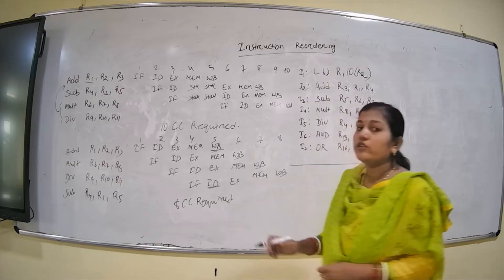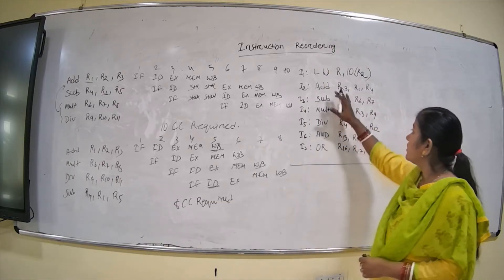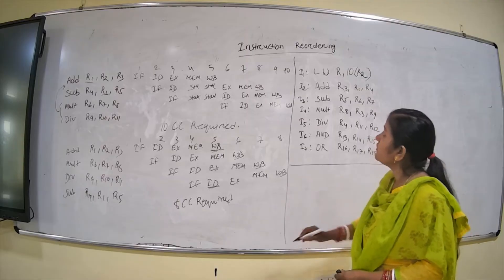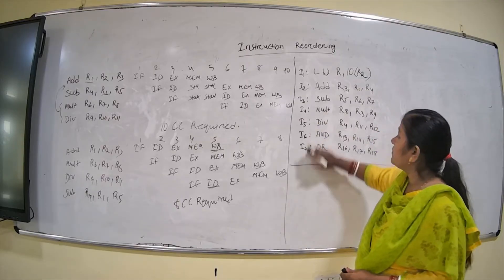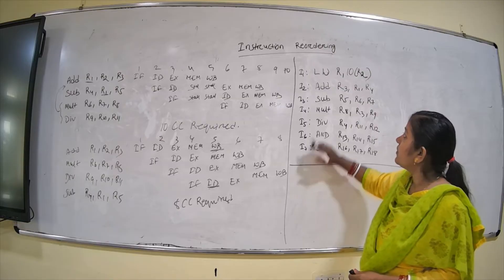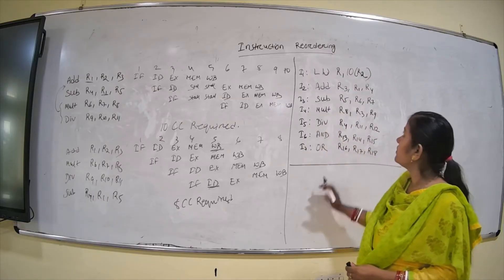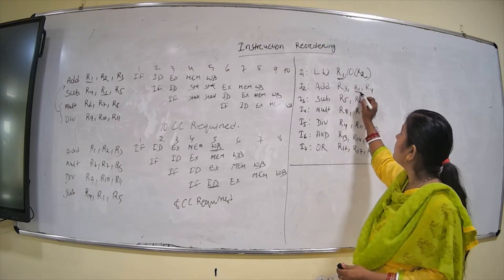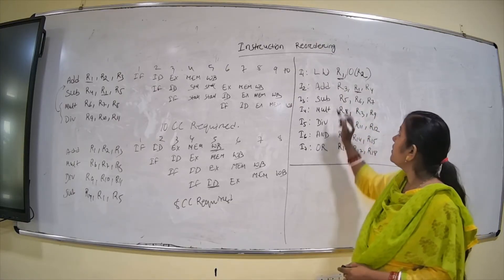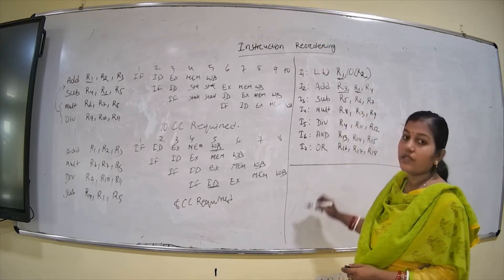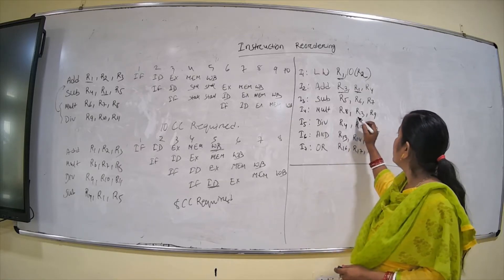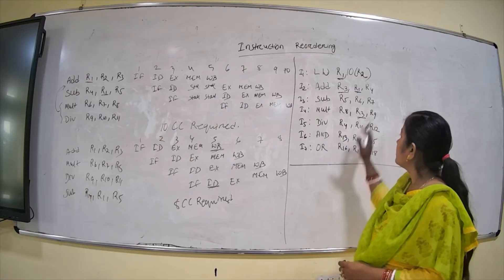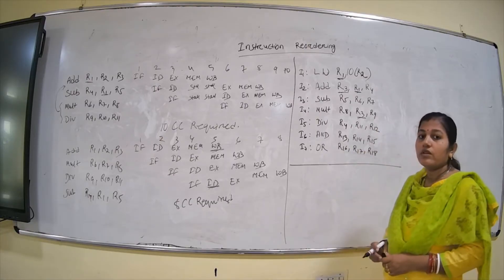Now I will show you another example. There are 7 instructions. Can you tell me where the dependent instructions are? Here it is producing R1 and using the value of R1. Here it is producing the value of R3 and using the value of R3. And there is no other dependency.